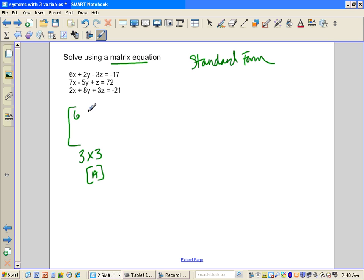So I would have 6 and 2 and negative 3, again, I'm taking the coefficients from the equations, 7, 7, negative 5, and 1, 2, 8, and 3, and I have x and y and z, and I have negative 17, 72, and negative 21. So I'm putting this in, this is a 3 by 1, putting this in for matrix B.